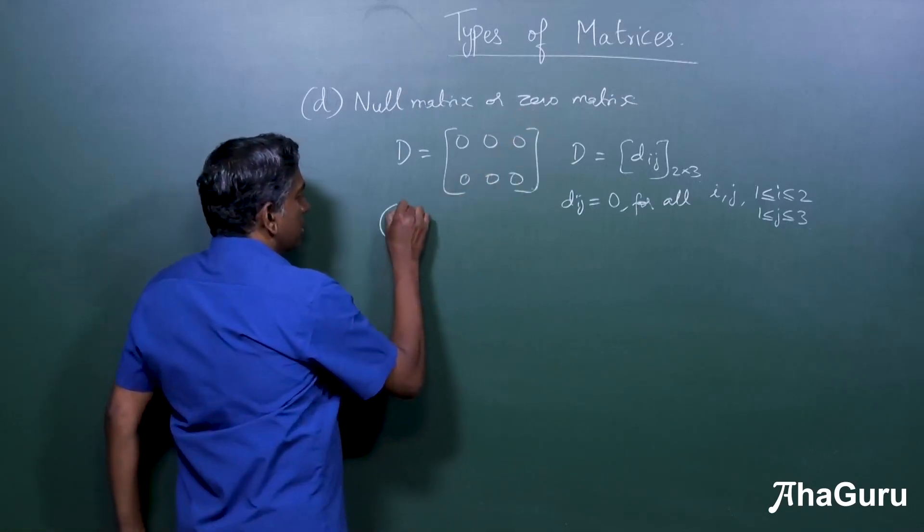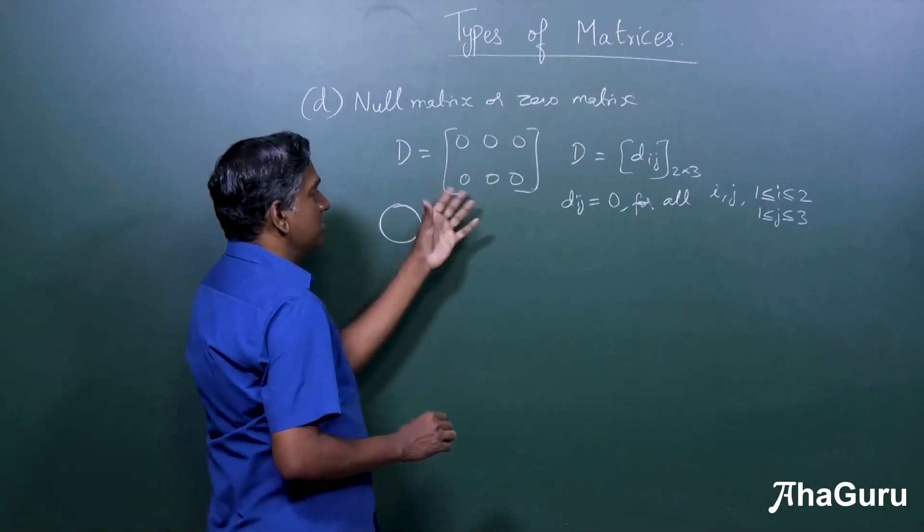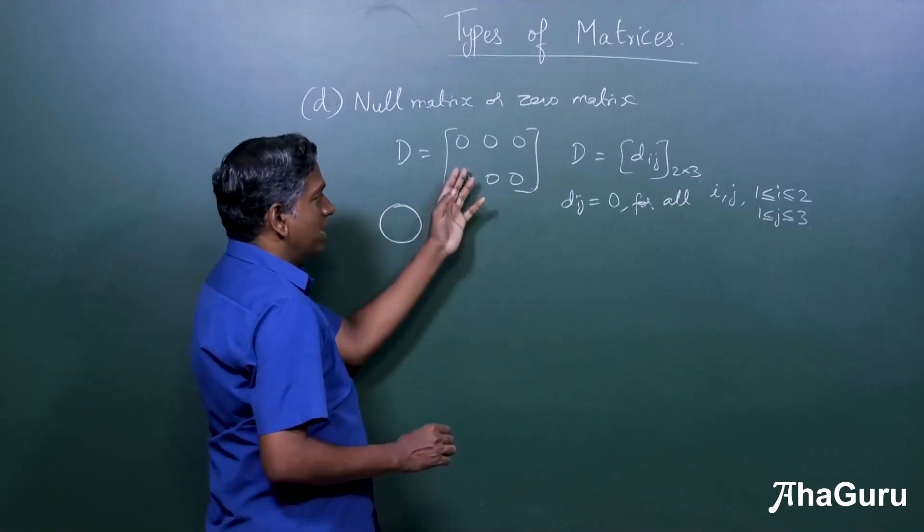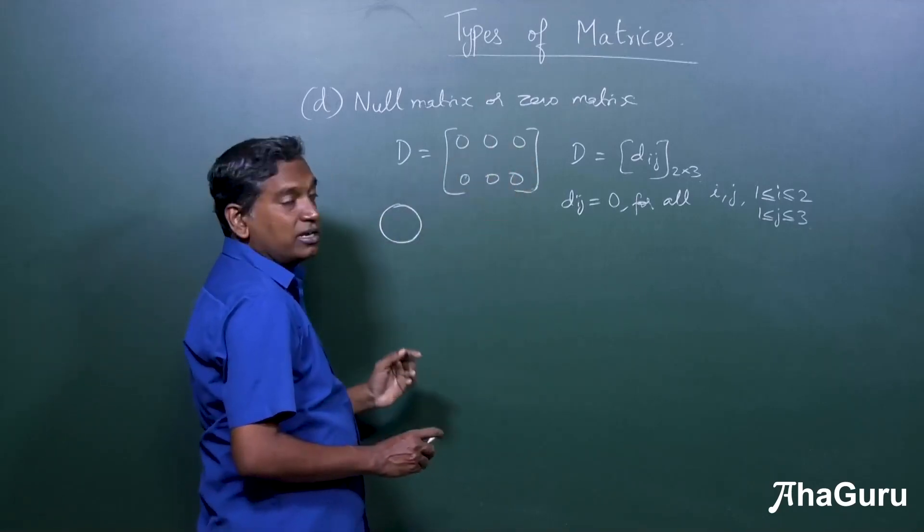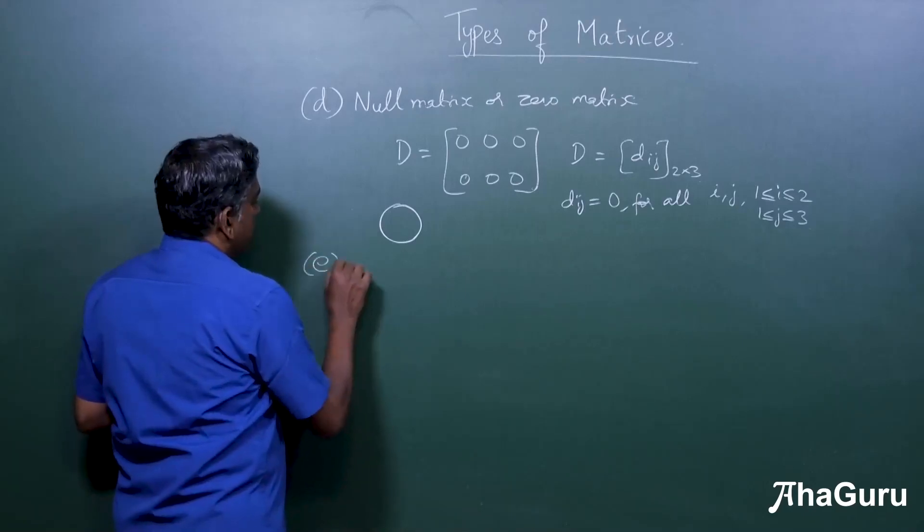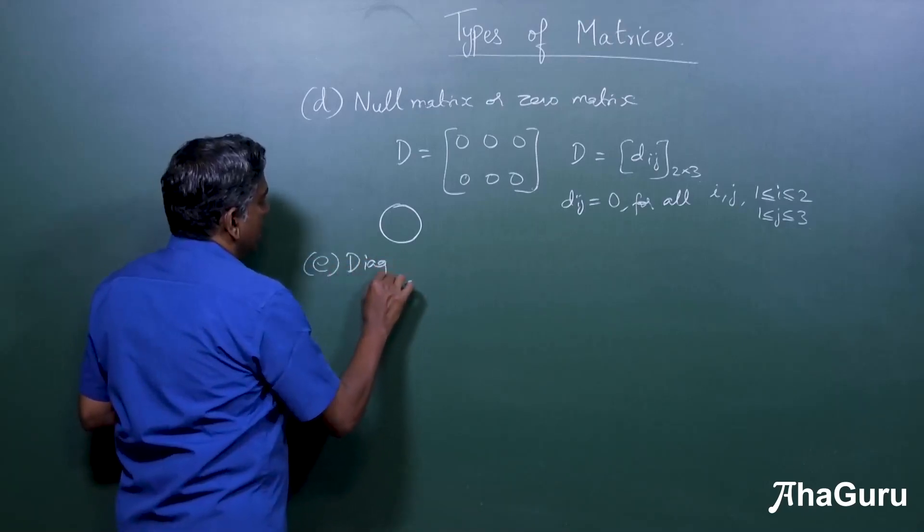This is called as a null matrix or zero matrix. Usually it's denoted also by the big capital letter zero or O so that you can understand that all the entries are zero.